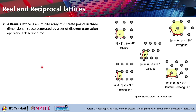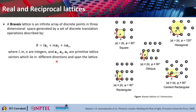Let us start with real and reciprocal lattice. A Bravais lattice is basically an infinite array of discrete points in three-dimensional space. For a three-dimensional system, you can write any lattice point as L·A1 + M·A2 + N·A3, where A1, A2 and A3 are the primitive lattice vectors and L, M and N are integers. This translational operation R can refer to any translation along the lattice.